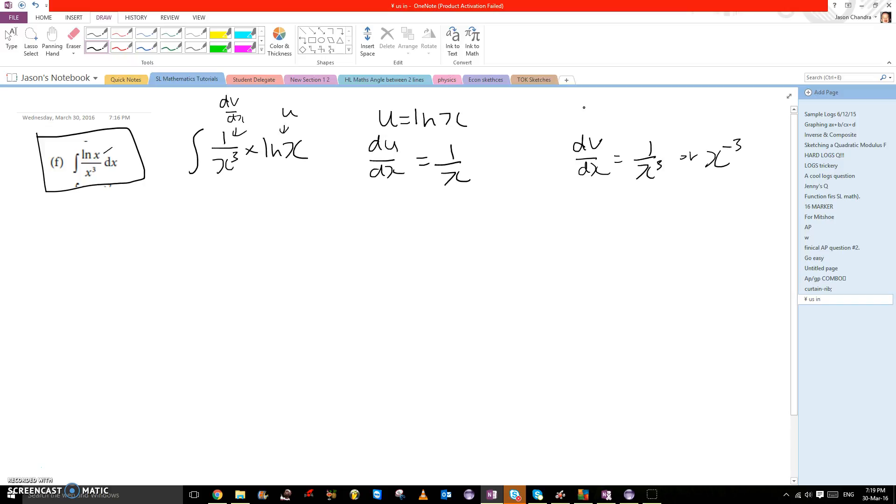When we integrate that function, we get x to the power of negative 2 divided by negative 2, which simplifies to negative 1 over 2x squared.